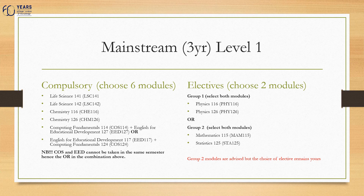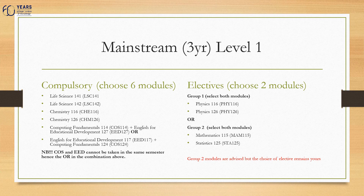Compulsory modules are Life Sciences 1 for 1 and 1 for 2, with 1 for 1 being in the first semester and 1 for 2 in the second semester. Chemistry 116 and 126, with 116 in the first semester and 126 in the second semester. The next two compulsory module choices are one of Computing Fundamentals — COS 114 or COS 124 — and English for Educational Development, EED 117 or 127.